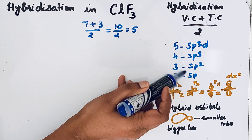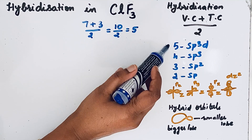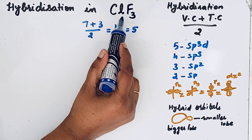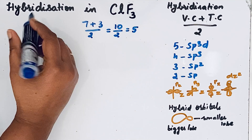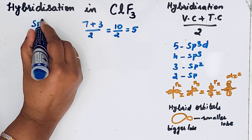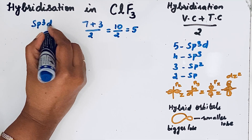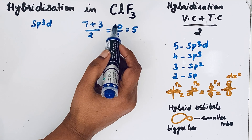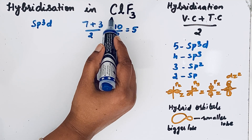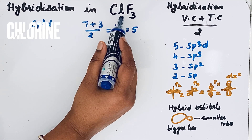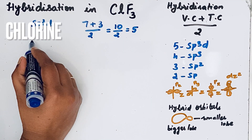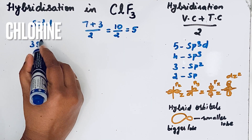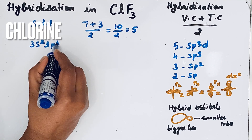Since we got 5, the hybridization in the CLF3 molecule is sp3d hybridization. Let us see the orbital diagram and understand how that hybridization takes place in CLF3. Chlorine has 7 valence electrons with the configuration 3s2 3p5.